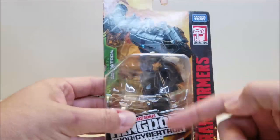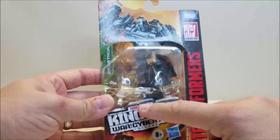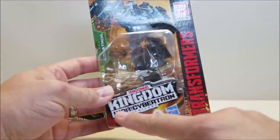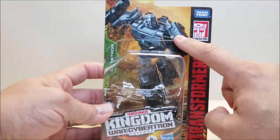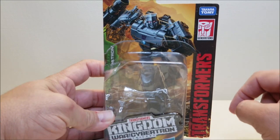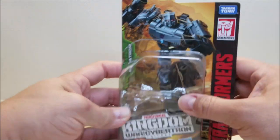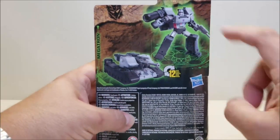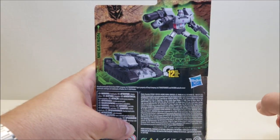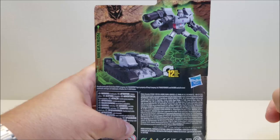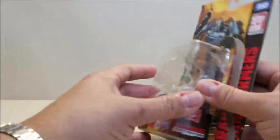He comes packaged in this little bubble card already in robot mode. You got some cool Kingdom Transformers artwork there, really cool artwork depicting Megatron right there at the top. Around the back you got some product shots of Megatron both in his robot and in his tank mode. That's about it for the packaging.